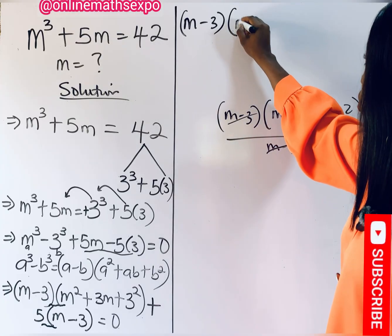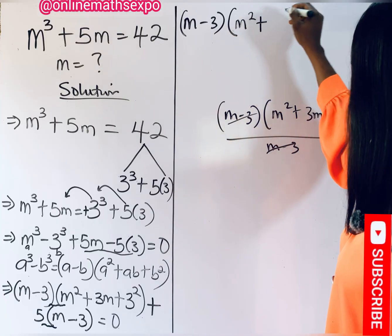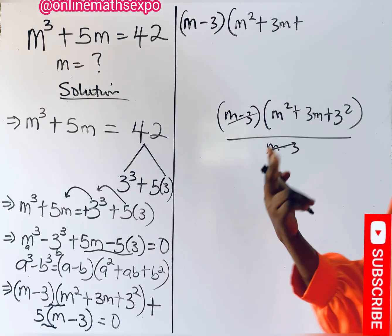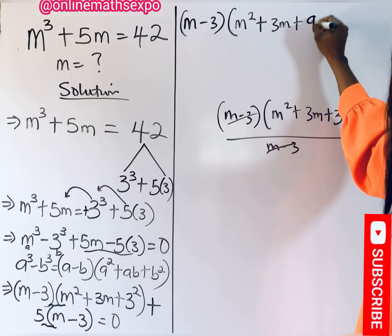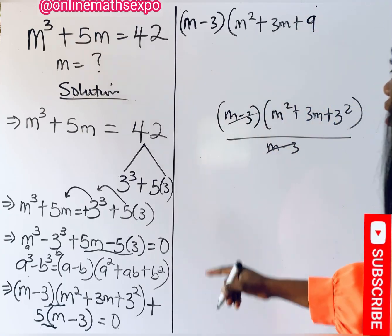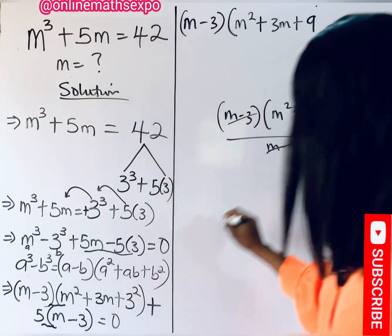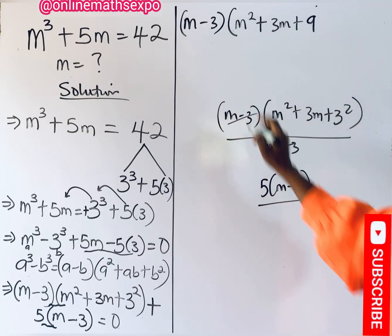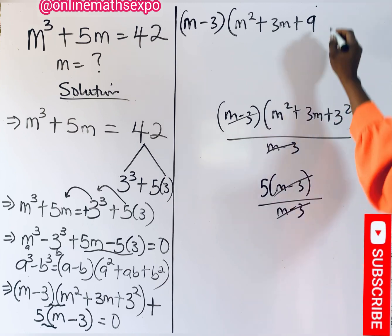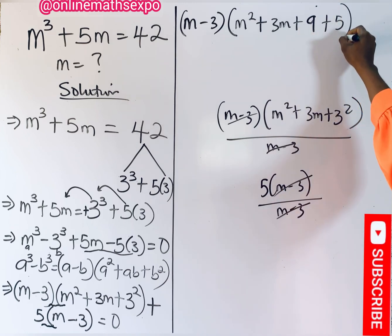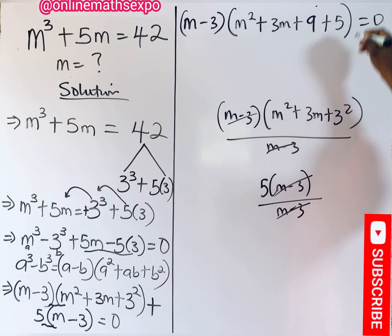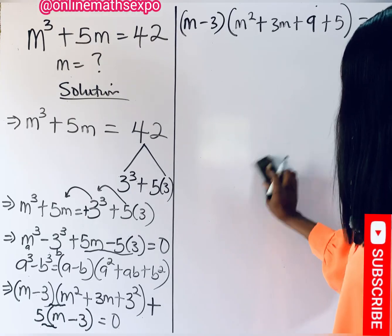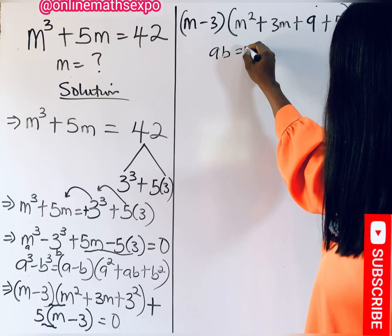So we are left with (m minus 3)(m² plus 3m plus 9 plus 5) equals 0, which simplifies to (m minus 3)(m² plus 3m plus 14) equals 0. Now recall that for every product ab equal to 0, either a equals 0 or b equals 0.